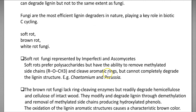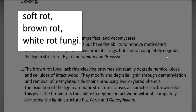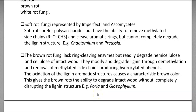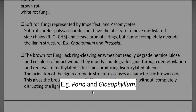Three different groups of fungi are involved in lignin degradation: soft rot fungi, brown rot fungi, and white rot fungi. Soft rot fungi comprise ascomycete members such as Chaetomium and Poronia, which are involved in efficient degradation. Brown rot fungi generally lack ring-cleaving enzymes but can readily degrade the hemicellulose and cellulose of intact wood. They can further modify and degrade lignin through demethylation and removal of methylated side chains, producing a hydroxylated form of phenols. This oxidation gives a brown color, which is the reason these fungi are called brown rot fungi. Examples include Poria and Gloeophyllum.